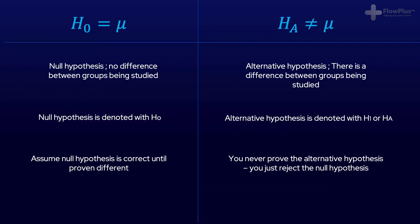Before we go on, I'll explain something called the null hypothesis. The null hypothesis assumes that whatever you are testing has no effect on the current output. It is almost like the innocent until proven guilty mindset. The null hypothesis is denoted by H0, and we always assume the null hypothesis is correct until it is proven different. Then there is an alternative hypothesis, which states that there is a difference between the output, denoted by HA or H1. A point to add is that you never prove the alternative hypothesis is true, but what you do is reject the null hypothesis, basically saying that there is a difference between groups.